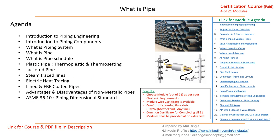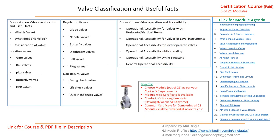We'll discuss the advantages and disadvantages of non-metallic pipes with a comparison. This topic would be incomplete without discussing ASME B36.10, which is the dimensional standard globally used for pipe dimensions. This is going to be a very interesting part.